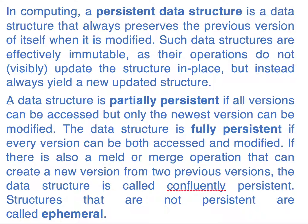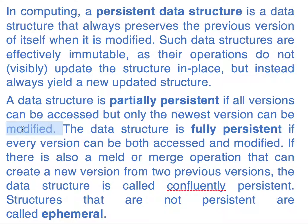A data structure is partially persistent if all versions can be accessed but only the newest version can be modified. So we can't modify x1 or x2 — we can only modify x3 — but we can still access x1 and x2.